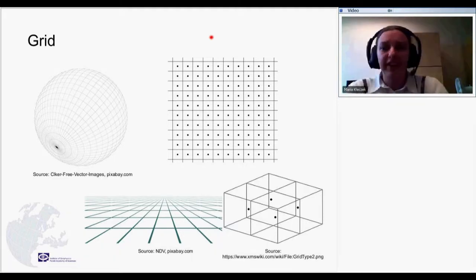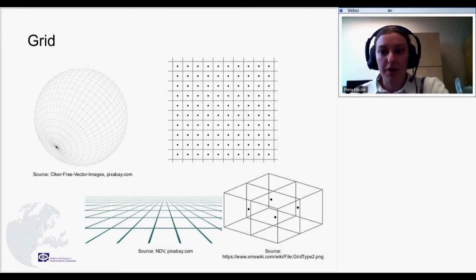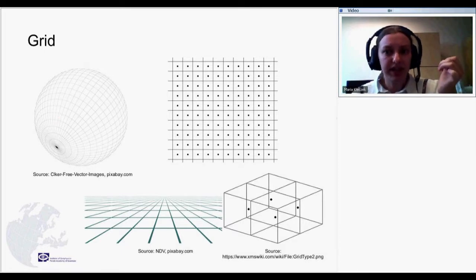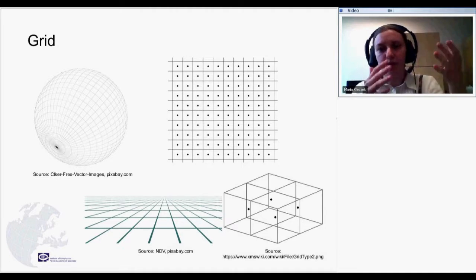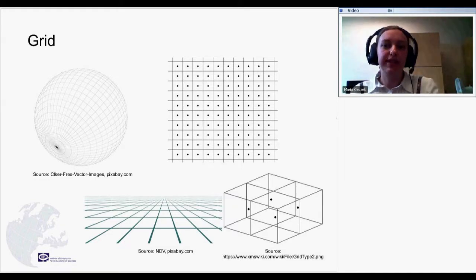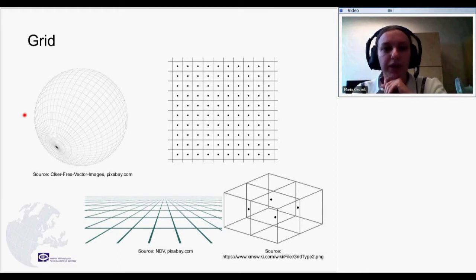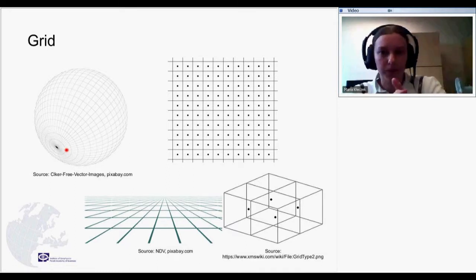The first thing to do is representing our system, in this case, the atmosphere, as a set of points in space. This is called a grid, a set of points on which the model will work, will calculate all the variables. Here you've got on your screens some images of grids. This is a global grid over the whole earth, like geographical coordinates, right?